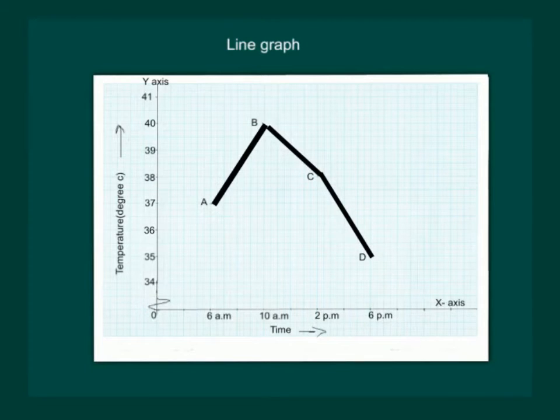From the graph we can see that temperature was rising from 6 am to 10 am and it was maximum at 10 am while it started decreasing as the time passed by and was minimum at 6 pm.